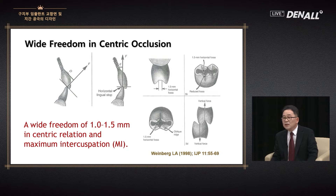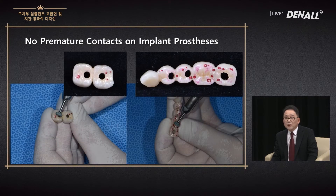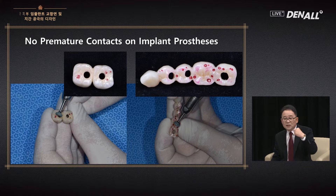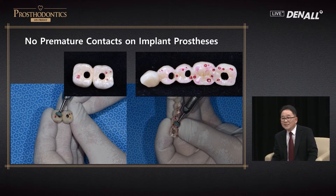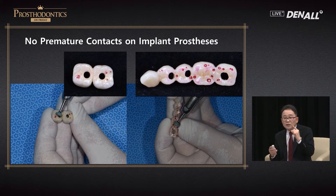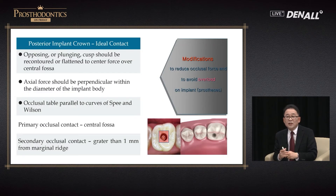Regarding the occlusion, I began to do insurance implants. It is very difficult to control the metal. Occlusal registration is very important to reduce chair time, and the lab process and impression taking should be made very accurately. For porcelain, I use a sponge bar for grinding. Slide-in centric and freedom in centric are important.